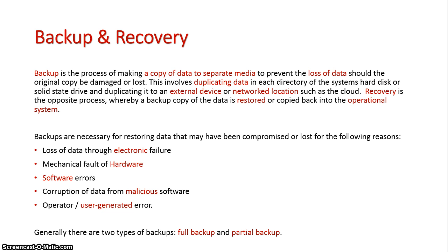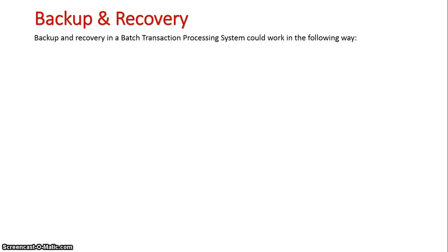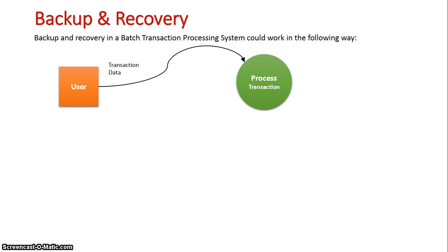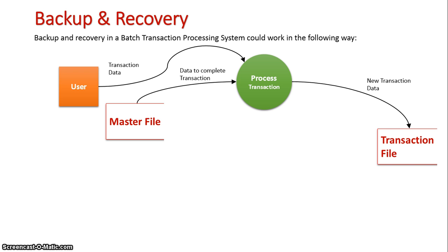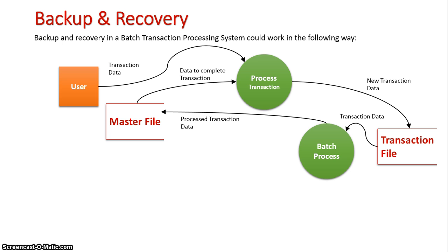There are two types of backups: full backup and partial backup. Looking at the backup process in a batch system — the user processes their transactions and enters data, which accesses a master file. In a batch system, data is saved to a transaction file until it gets batch processed, at which point it goes back into the master file.